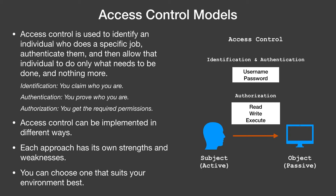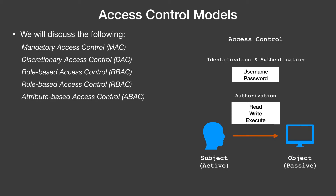Access control can be implemented in different ways. Each approach has its own strengths and weaknesses, and you can choose the one that is best suitable for your requirements. There is a subject and there is an object. A subject is an active entity that is trying to access something, say a file. The user is the subject — the active entity — and the file is the object, a passive entity.